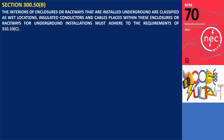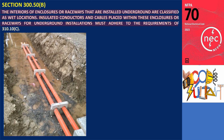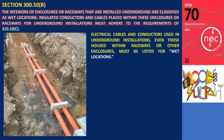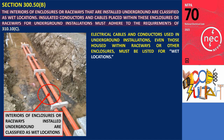Section 300.5(B) specifies that the interiors of enclosures or raceways installed underground are classified as wet locations. Consequently, all insulated conductors and cables placed within these enclosures or raceways for underground installations must comply with the requirements of section 310.10(C). This section mandates that all electrical cables and conductors used in underground installations, even those housed within raceways or other enclosures, must be listed for wet locations.